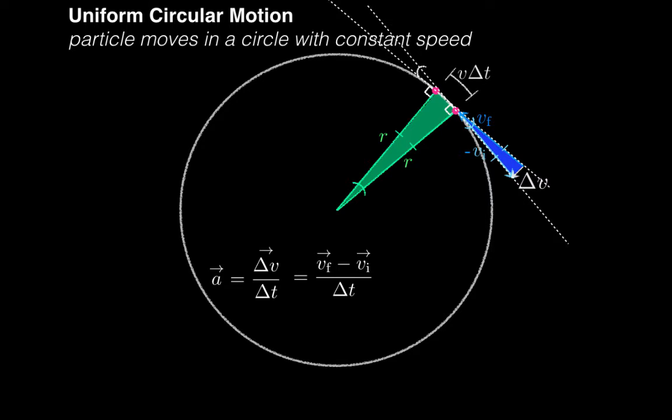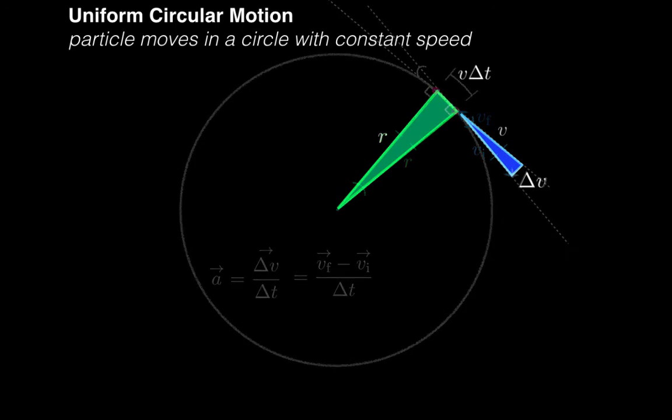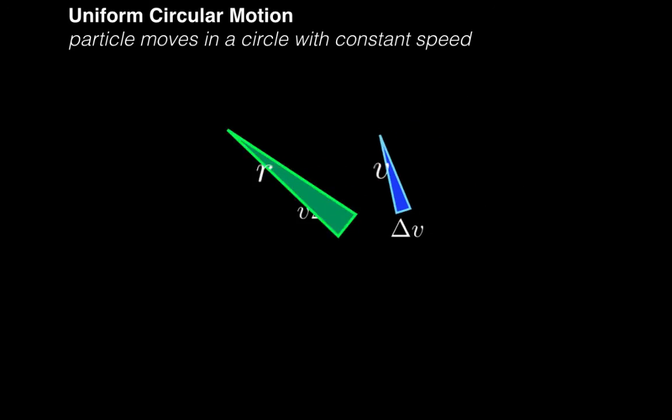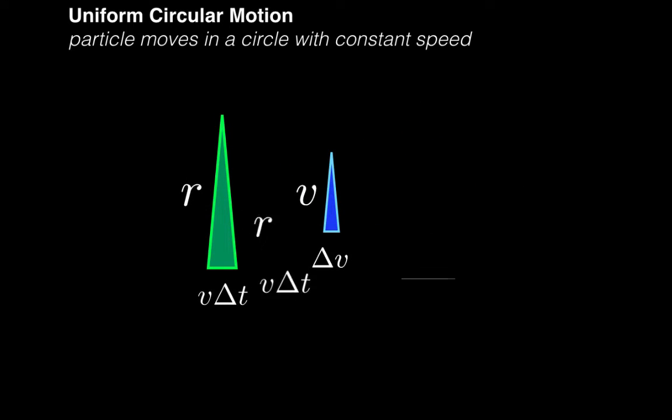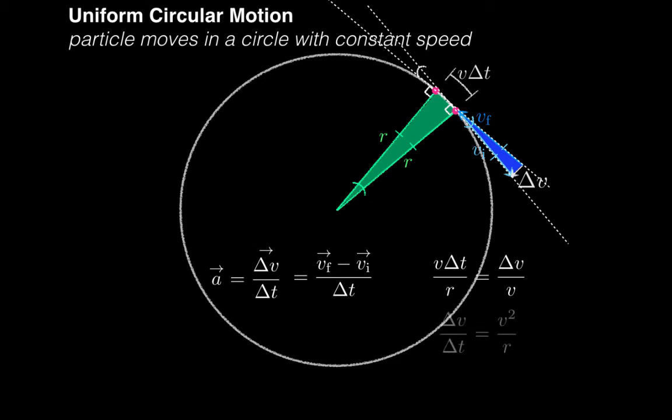The next trick is to use similar triangles to compare the ratios of the side lengths of the two triangles. Comparing the green triangle to the blue triangle, v delta t over r is equal to delta v over v. Rearranging, we find that delta v over delta t, which is of course acceleration, is equal to v squared over r.